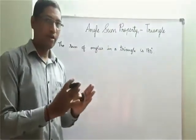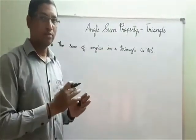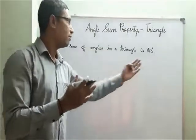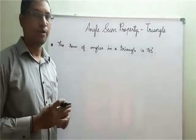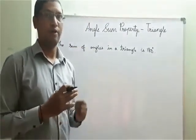That is, you take any triangle, if you measure all the three angles and add them, you get 180 degrees. This is called the Angle Sum Property. Let us do an activity.